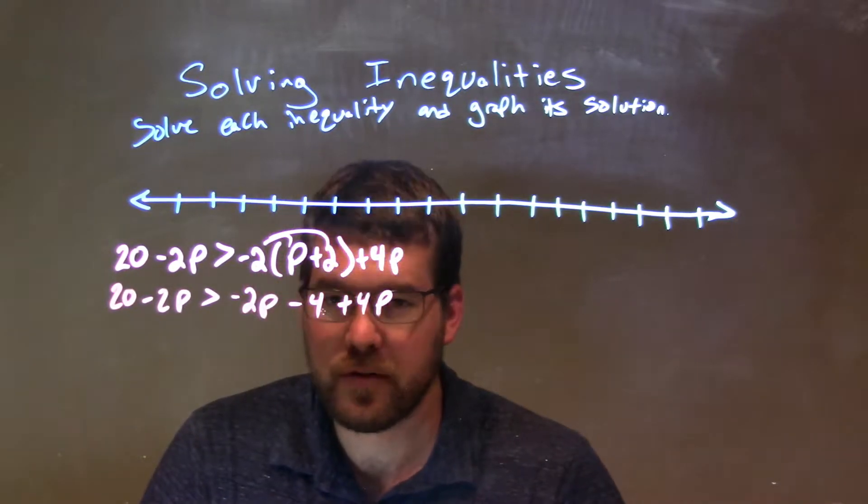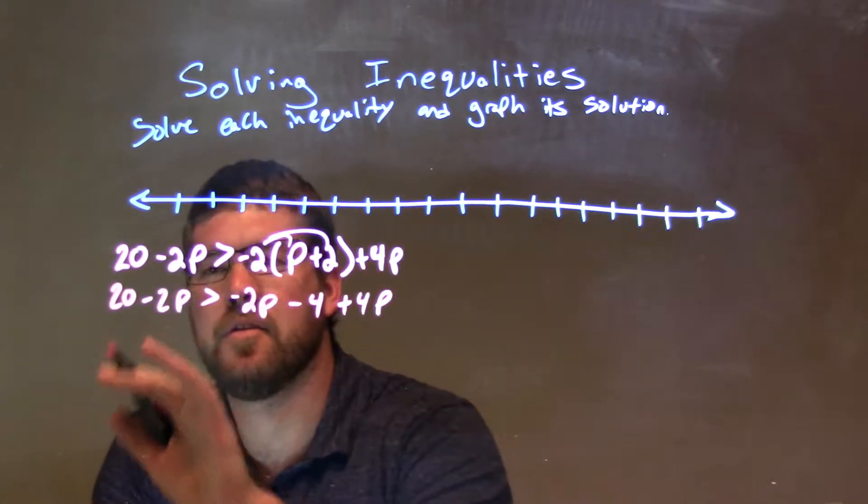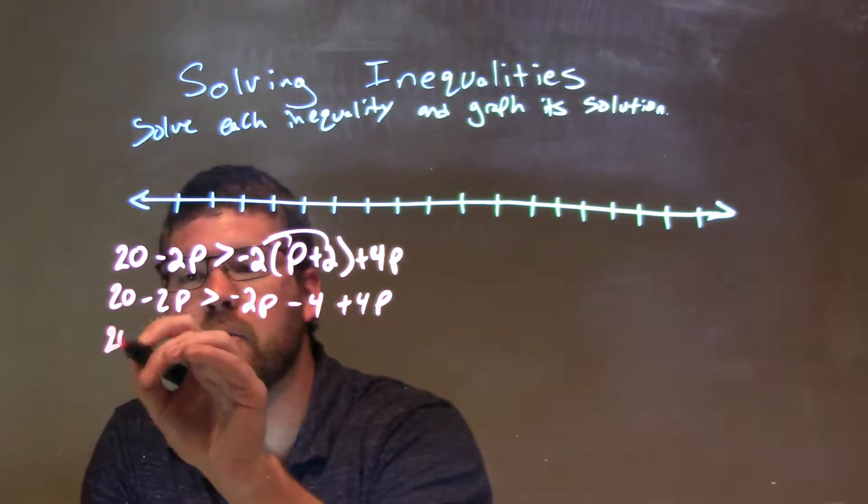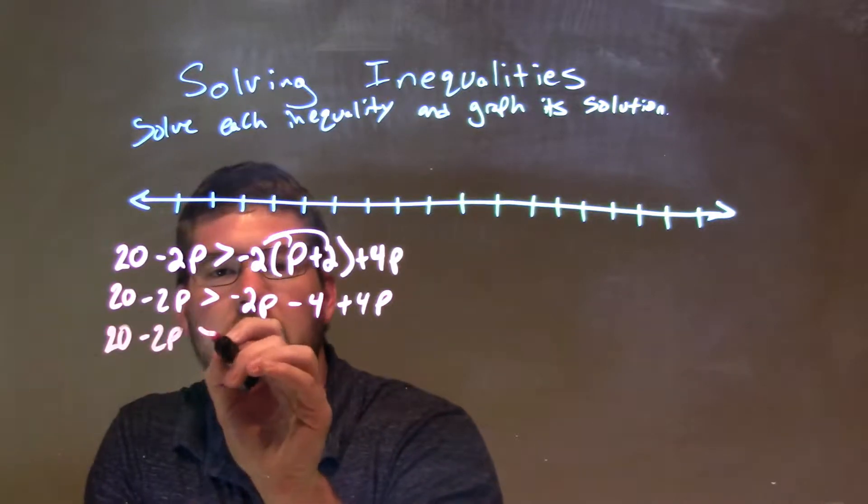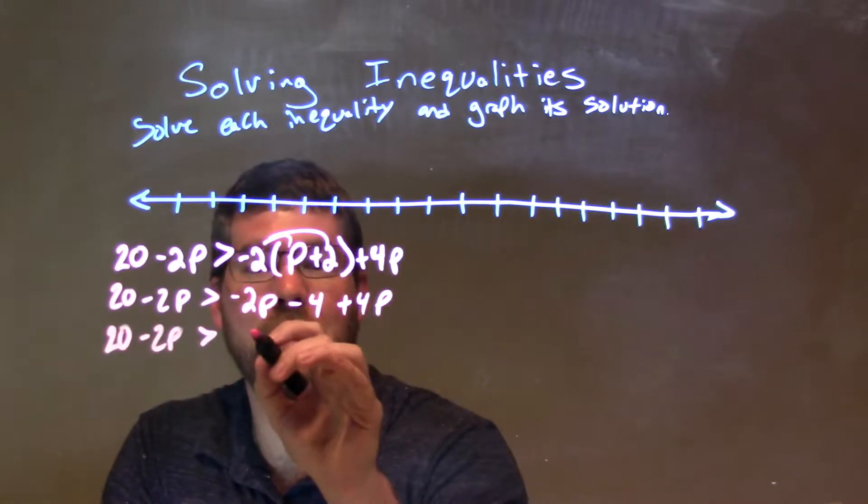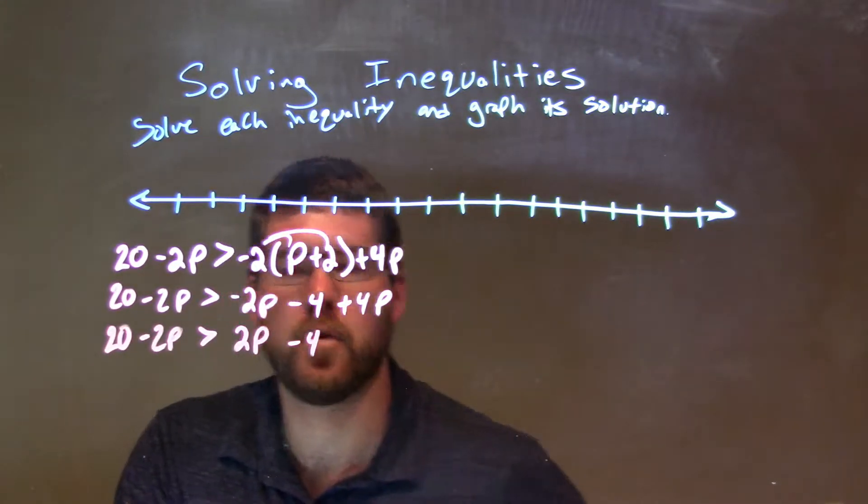So, next thing I'm going to do, I'm going to simplify the right-hand side. Okay, the left-hand side is already simplified as much as it can be. We have 20 minus 2p on the left is greater than negative 2p and a positive 4p comes together to be a positive 2p. Okay, and then we have minus 4 right there.